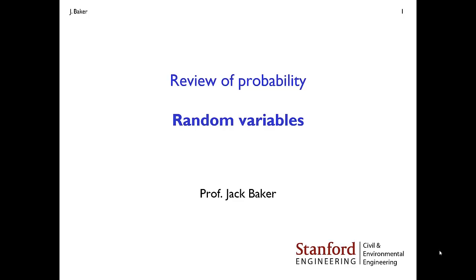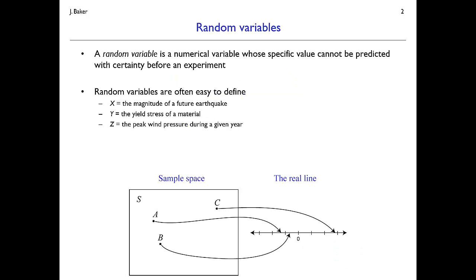Let's talk about the conventions here, which share the deeper probability framework with the previous set theory, but in a more convenient format for the types of things we want to study. So, a random variable is going to be a numerical value where the specific value can't be predicted before the experiment happens. Things like the magnitude of a future earthquake, the strength of a material like a yield stress, or the peak wind pressure on a building — all of those are numerical values we can't predict ahead of time.